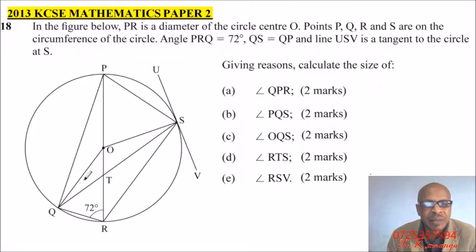Angle PRQ is 72. We are given that angle there. QS is equals to QP. So those two lines are the same. And USV is a tangent to the circle. Giving reasons, calculate the size of angle QPR. This is the angle that we are interested in.